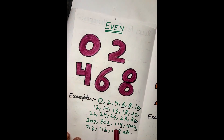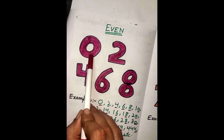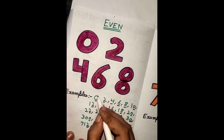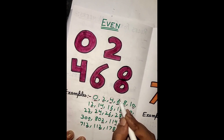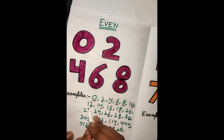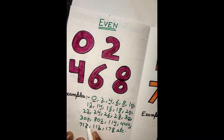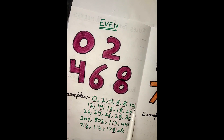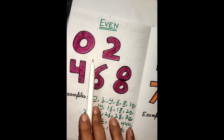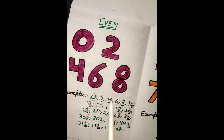Here I have prepared the even numbers chart. As we have seen, we should have 0, 2, 4, 6, or 8 at the end, and you can see all these numbers on the ones place are 0, 2, 4, 6, or 8 — so all these are even numbers.